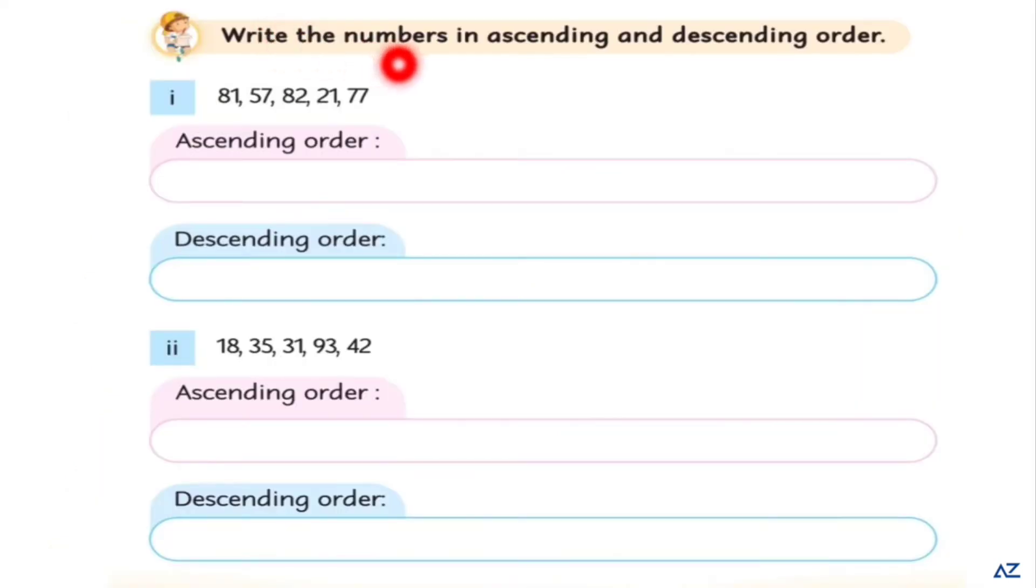Now write the numbers in ascending and descending order. Dear kids, we already discussed about ascending and descending order. Ascending means smallest to largest and descending means largest to smallest.